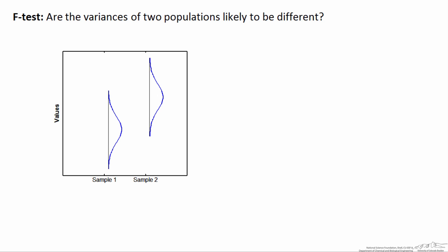When you conduct an F-test, you're answering the question: are the variances of two populations likely to be different? What I'm showing you here is something you'll never see in real life — the population distribution for two different samples, and both distributions are normally distributed. The mean for sample 2 is higher than the mean for sample 1, but with an F-test, we don't care about the mean. All we care about is the variance, or the actual width, of these two distributions.